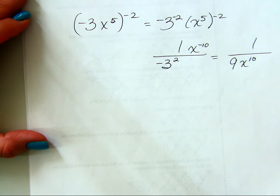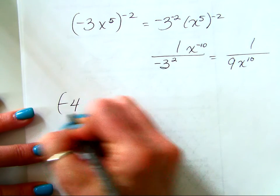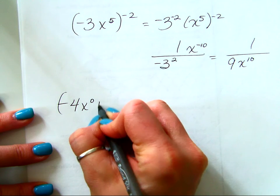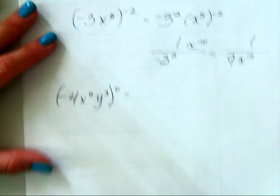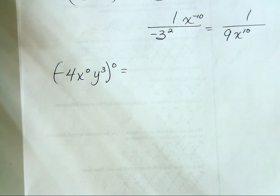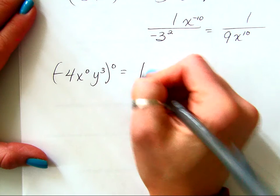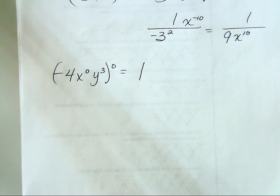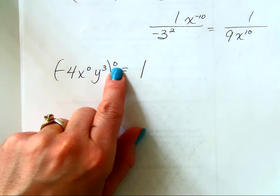What if I have negative 4x to the 0, y to the 3rd, to the 0 power? That's the easiest problem on the planet — the answer is 1. Anything to the 0 power is 1. I don't care what's inside the parentheses; if it's got an exponent of 0, it's 1.